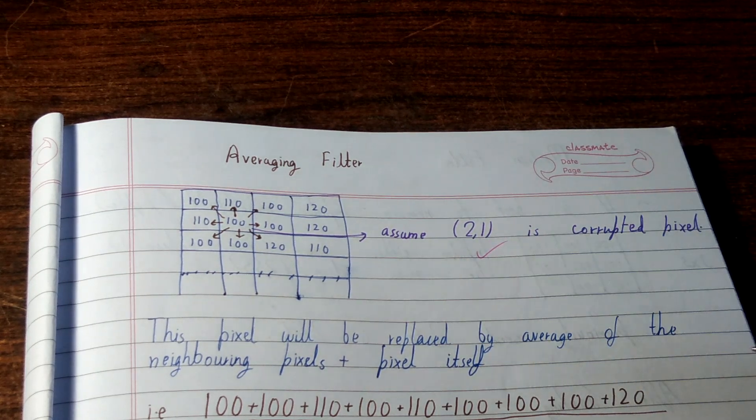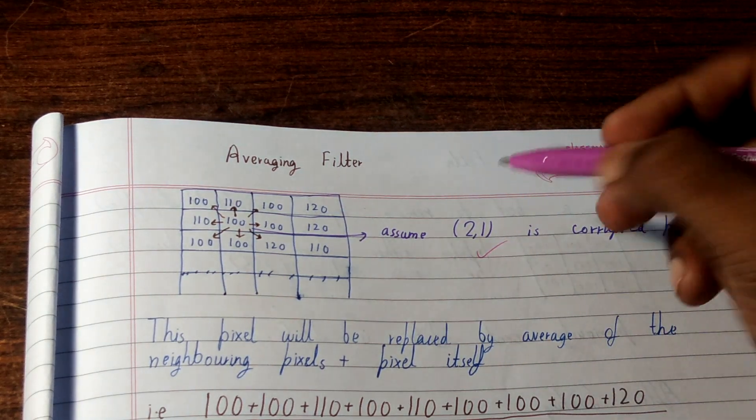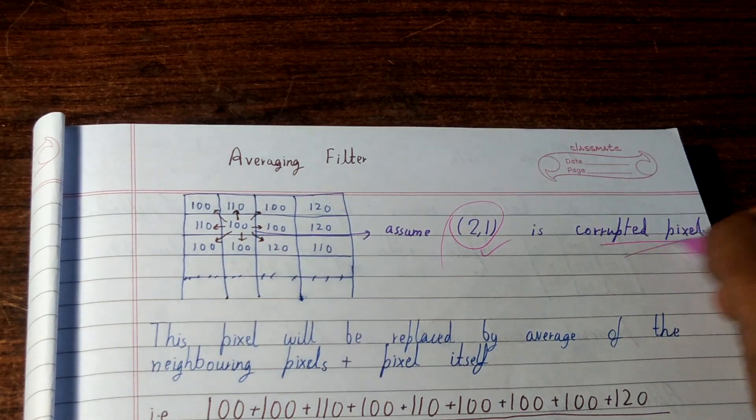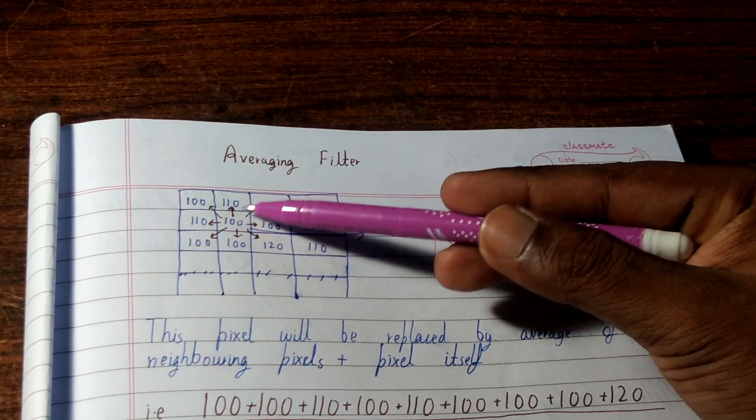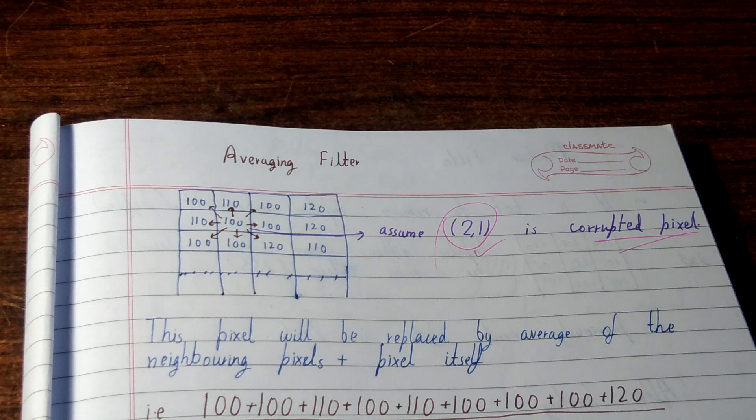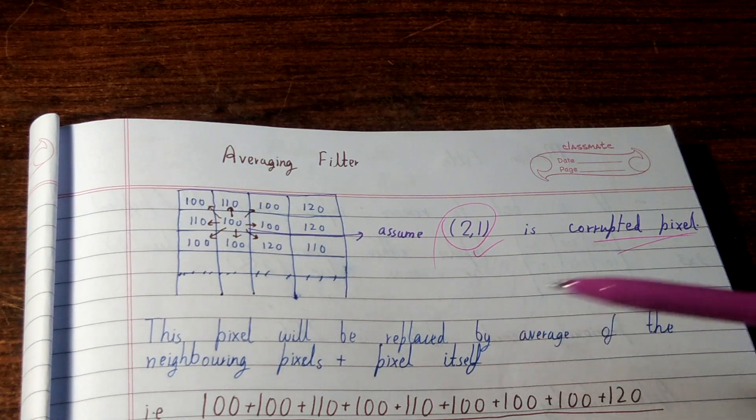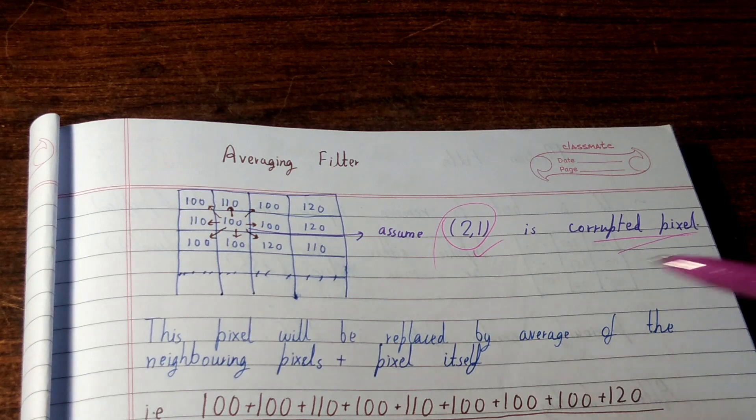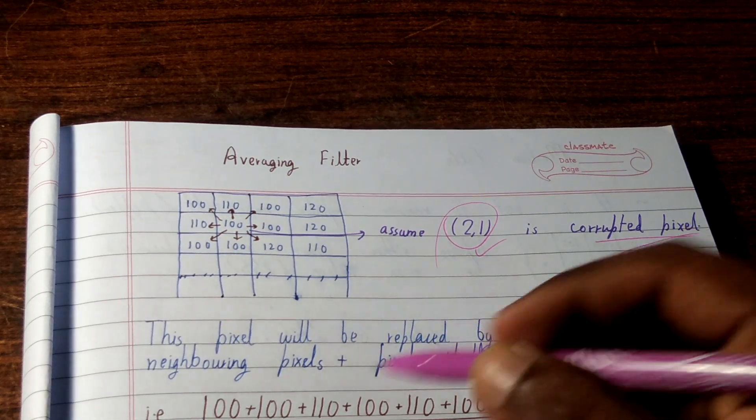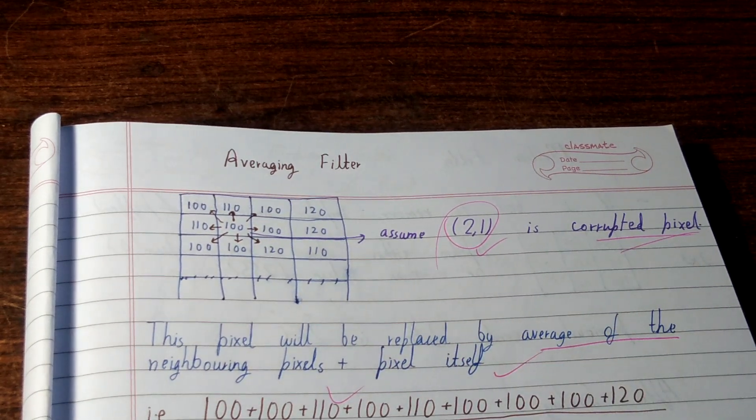Let's assume here in exam you will be given a particular pixel address that is corrupted. For example, this pixel is corrupted. So how you use the averaging filter? You just have to take this pixel and replace this pixel with the average of the neighboring pixels as well as the pixel itself.